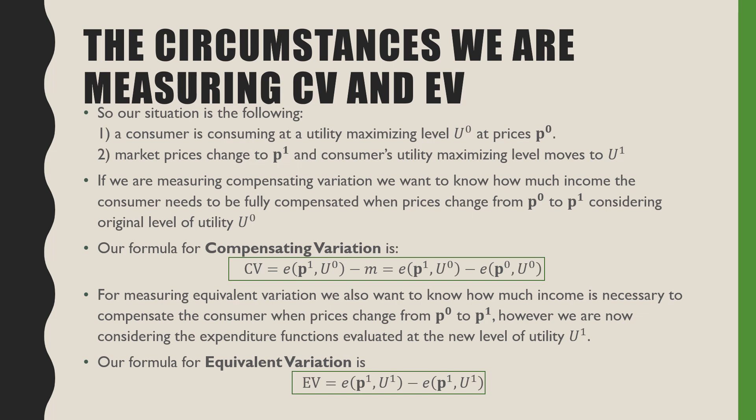For equivalent variation, we also want to know how much income is necessary to compensate the consumer when prices change from p0 to p1. However, we are now considering the expenditure functions evaluated at the new level of utility u1. So our formula for equivalent variation is: our expenditure function at prices p1 and u1, minus our expenditure function at prices p0 and u1.